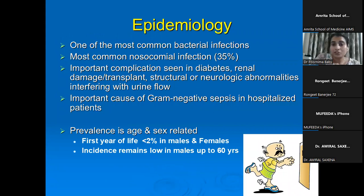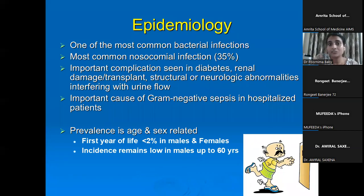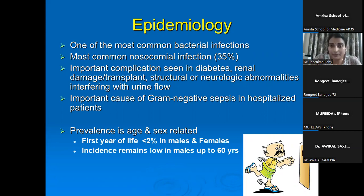UTI is one of the most common bacterial infections, and even in a nosocomial setting it is the most common nosocomial infection — that is CAUTI, which is catheter-associated urinary tract infection. This is also seen as an important complication in diabetes, when there is renal damage, in transplant settings, and when structural or neurologic abnormalities interfere with urine flow. It is also an important cause of gram-negative sepsis and urosepsis in hospitalized patients.